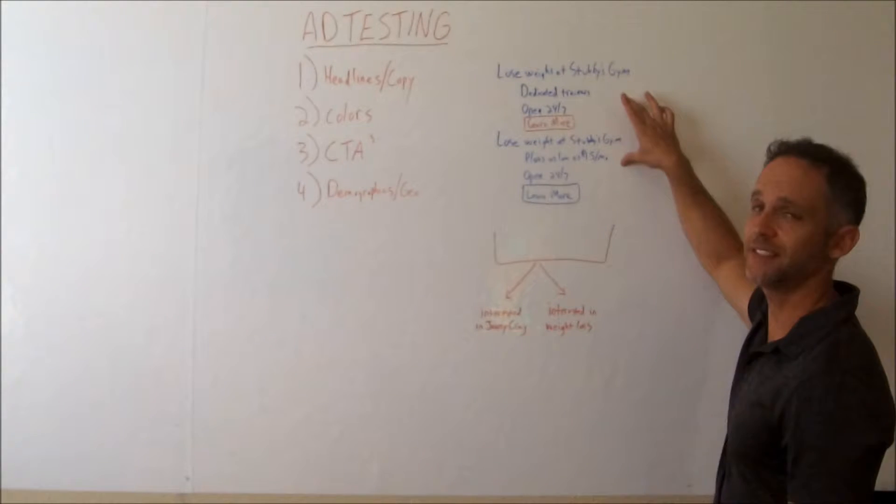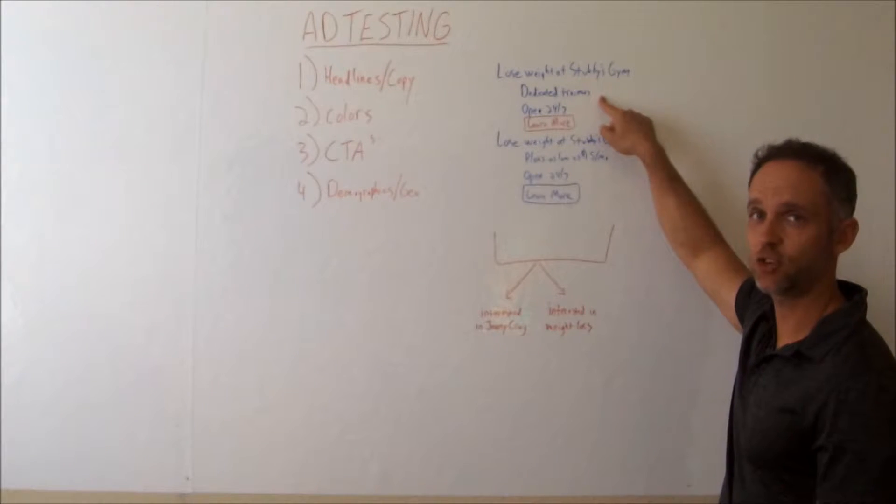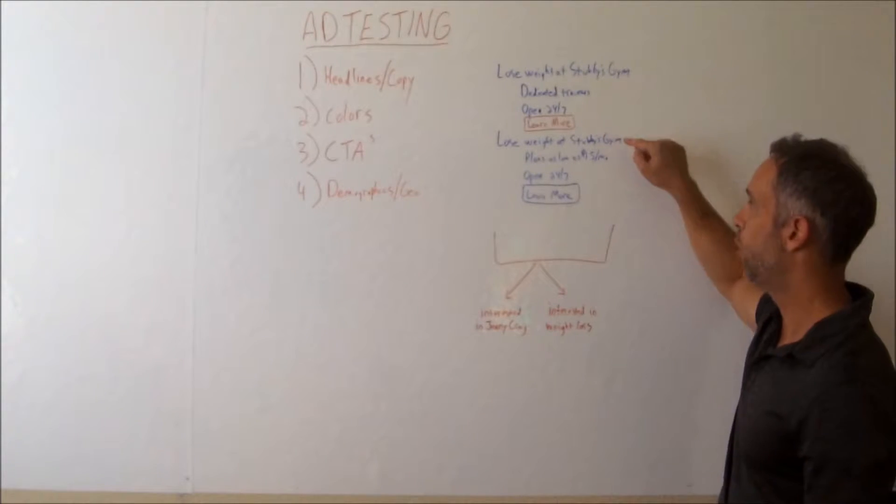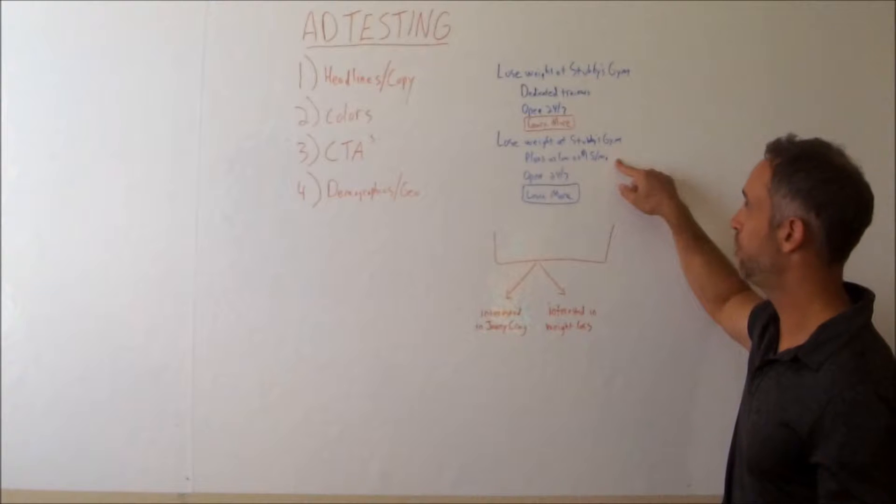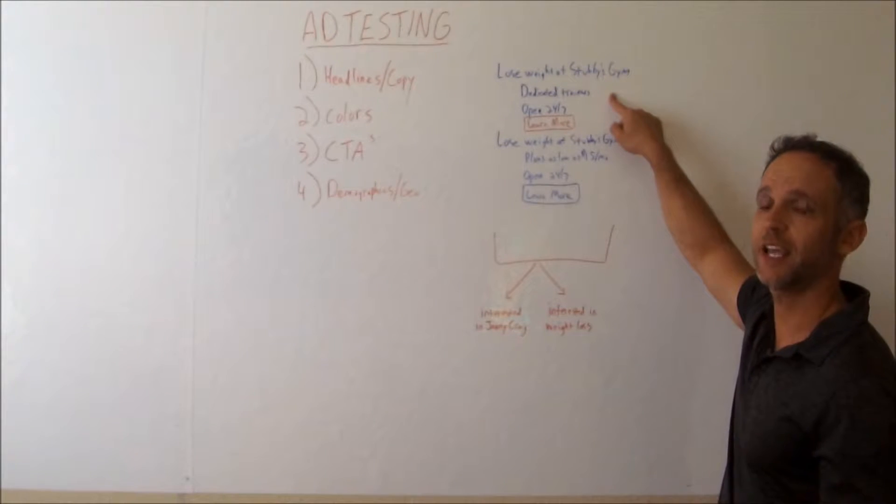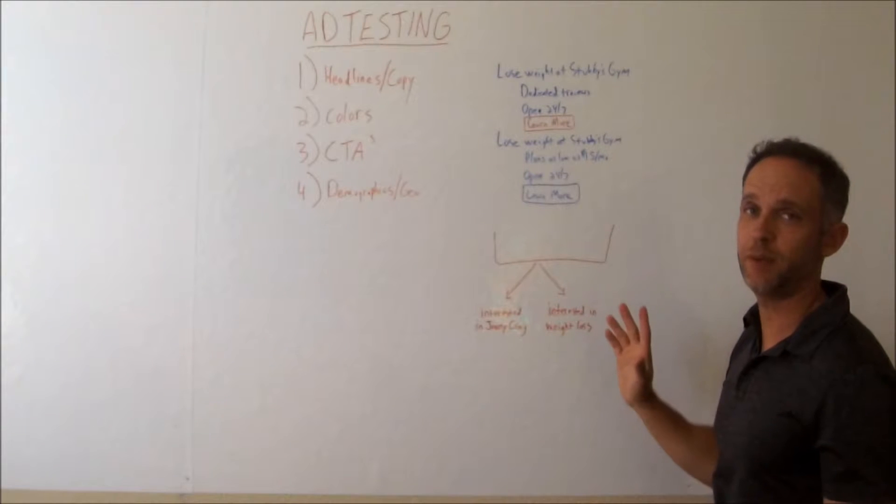So what you are testing is if the audience is reacting to the fact that they have dedicated trainers on staff or that the plans are as low as $15 a price point. So is price point more important or is the fact that they have dedicated trainers more important? That's what you're going to be testing to the same set of people.